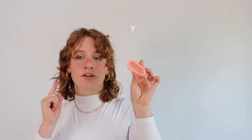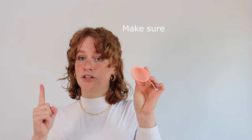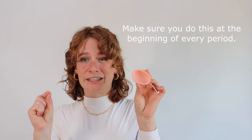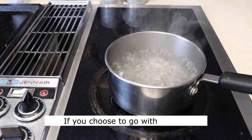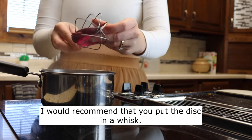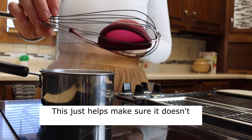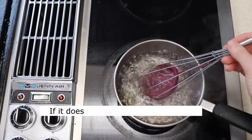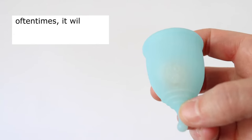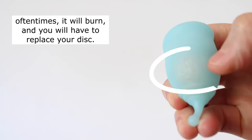When you first get your menstrual disc you're going to want to make sure that you sterilize this. Make sure that you do this at the beginning of every period. Now there are three ways to sterilize: boiling, steaming, and spray. If you choose to go with boiling I would recommend putting the disc in a whisk. This just helps to make sure that it doesn't touch the edges of the pot. If it does touch the edges of the pot oftentimes it will burn and you'll have to replace your disc.